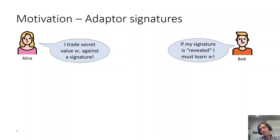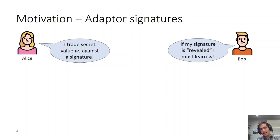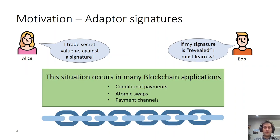By "revealed" here, I mean that the signature is published on, for example, a bulletin board, a website, or a blockchain. Now you might be asking, is this a scenario which happens in protocols actually? And the answer is yes. There are many protocols over the blockchain that need to tackle such an exchange — for example, conditional payments, atomic swaps, and payment channels.